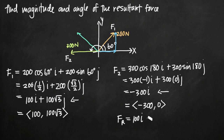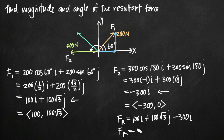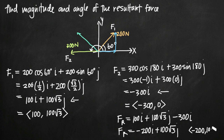Adding the two vectors: 100i + 100√3 j + (−300i) gives us a resultant force F sub r equal to −200i + 100√3 j, which can also be written in vector notation as ⟨−200, 100√3⟩. This is the expression for our resultant force. Now we need to find its magnitude and angle.